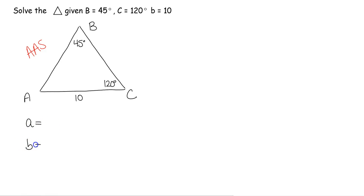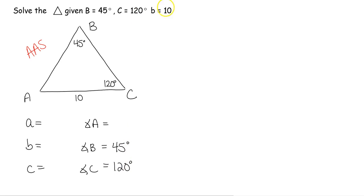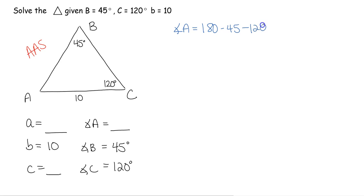The six pieces are three sides a, b, c and three angles A, B, C. We were given angle B = 45°, angle C = 120°, and side b = 10. We need to solve for side a, side c, and angle A. Since we already have two of the three angles, we find angle A easily: 180 − 45 − 120 = 15 degrees.